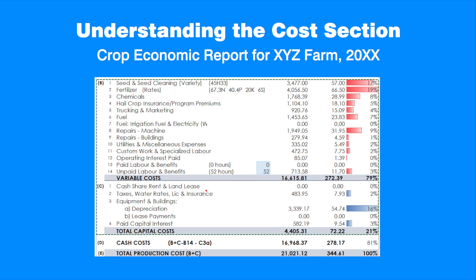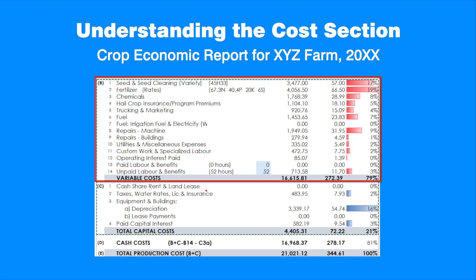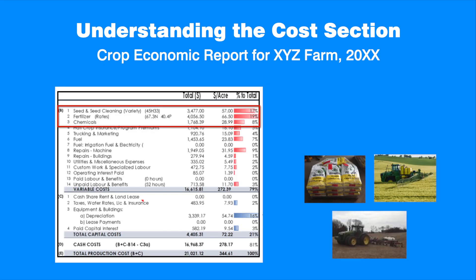Next, let's examine the cost section. It summarizes all costs for growing Roundup Ready canola on the field in a given fiscal year, subdivided into variable and fixed cost subsections. In our example, seed, fertilizer, and chemical costs account for $152.49 per acre, or 44% of the total production costs. Understanding these costs will help make management decisions on inputs and practices such as crop and variety choice, soil testing, and use of fertilizer and chemicals.